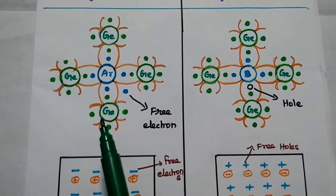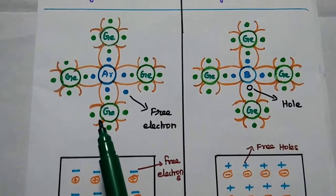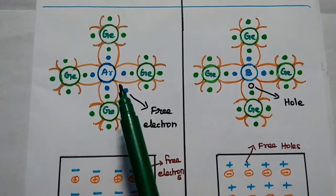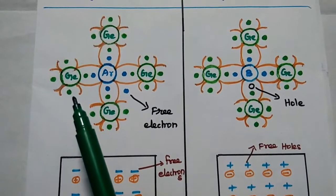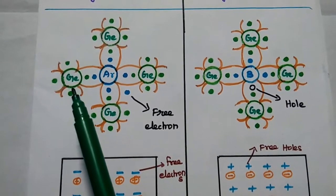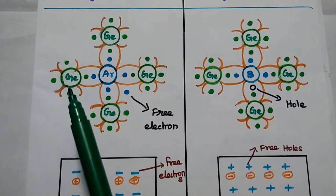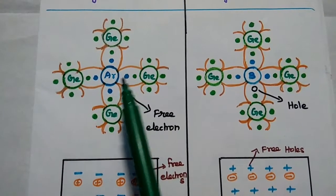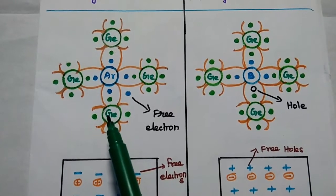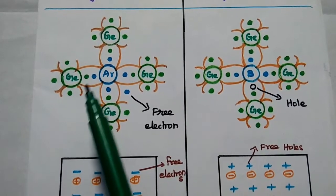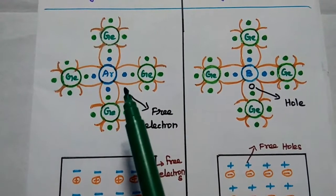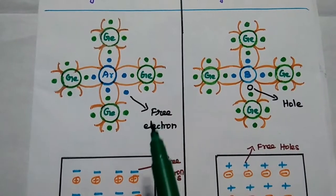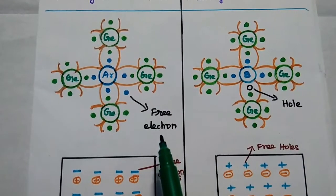In N-type semiconductor, when a pentavalent impurity such as arsenic is added with the semiconductor material — here we can consider germanium material — 4 of 5 valence electrons are coupled with other germanium atoms using covalent bonds. The 5th one will be a free electron.